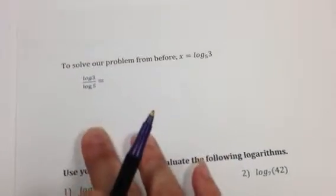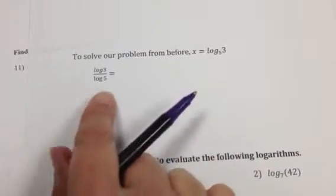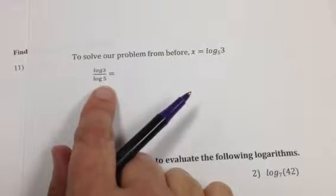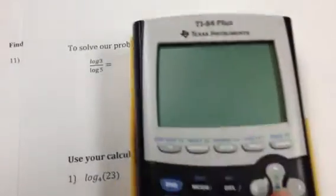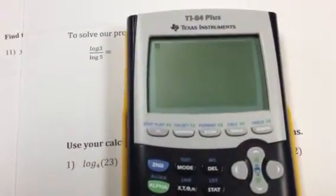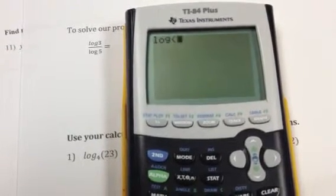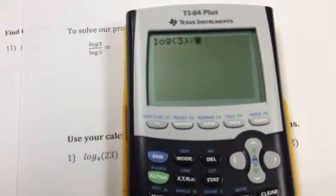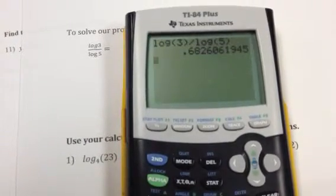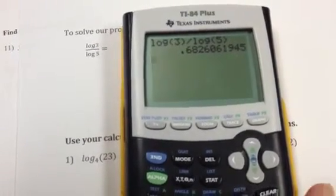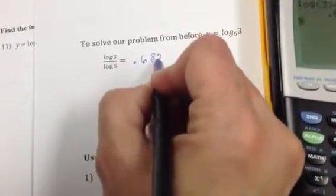All right. Let's work through a few examples here. So first, to solve the problem we had before, we would take the log of 3 divided by the log of 5, and we put that in our calculators. Don't forget, when you're putting it in your calculators, you're going to use the log button. So log 3, close the parentheses, divided by log 5, and close the parentheses. And we get 0.6826. So I now know that this is approximately 0.6826.